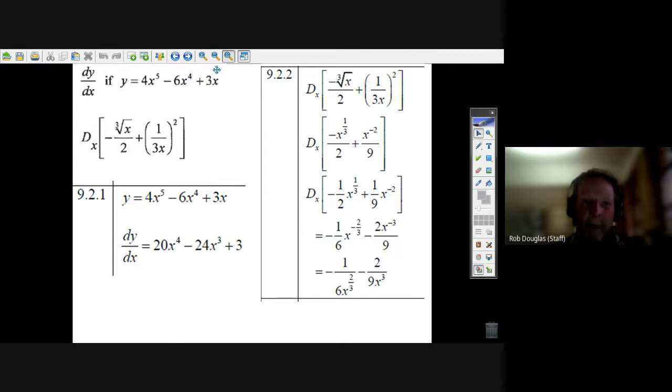So whenever I see 15x, 13x, the gradient is just the number in front. Well, that's pretty easy. The first question is pretty straightforward.